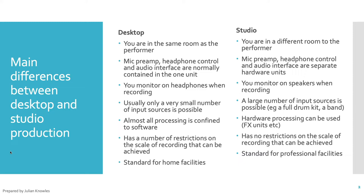In desktop production you've got an interface which has a mic preamp and headphone control located on the audio interface and it's normally just one simple unit. In the studio these are all separate devices — the mic preamps, or it could be a mixing console, the headphone system, and the audio interfaces are all typically completely separate hardware units.